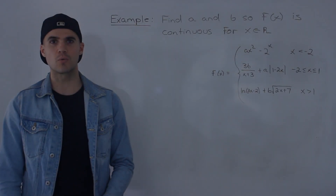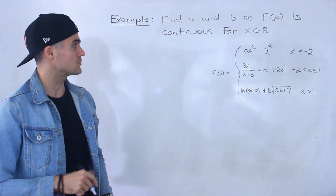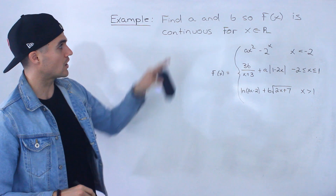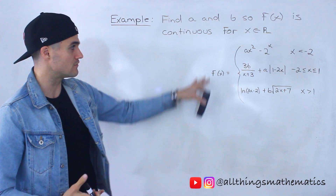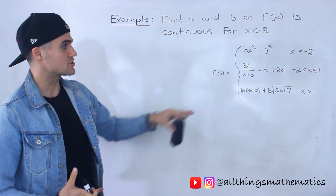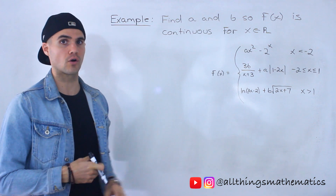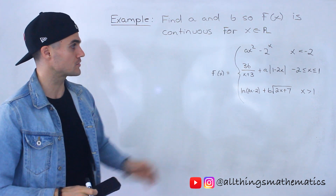What's up guys? Patrick here. Welcome back. In this question, what we've got to do is find the constants a and b for this piecewise function here, so that it's continuous for all x values.